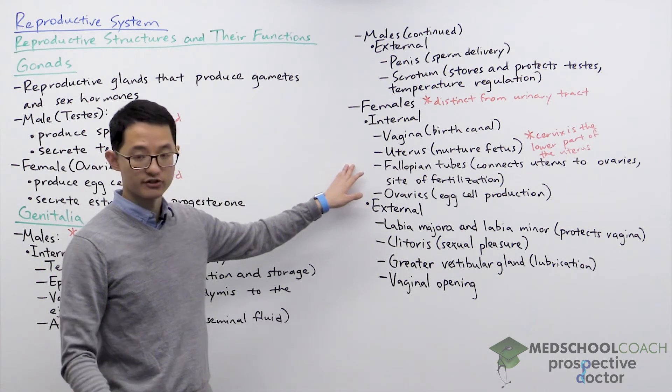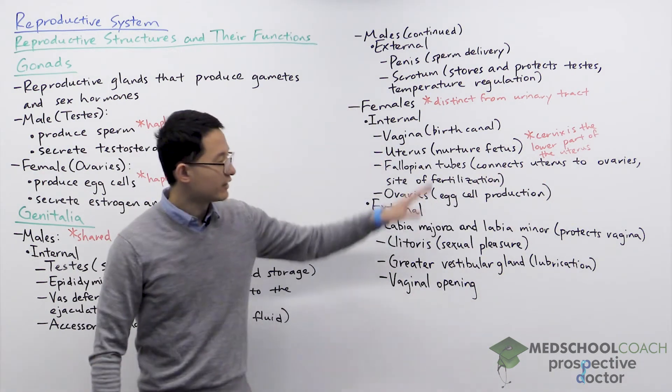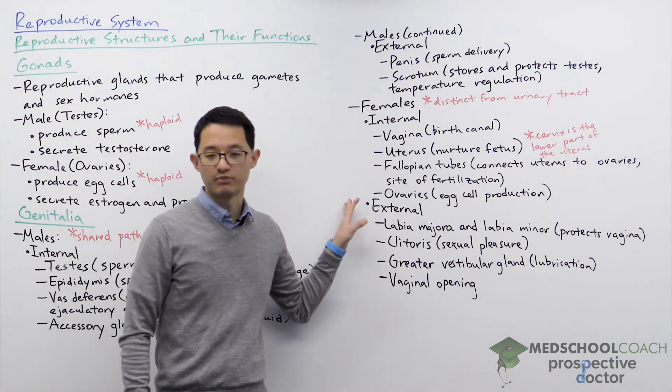The fallopian tubes, there are two of them. They connect the uterus to the ovaries and the ovaries is where egg cells are produced.